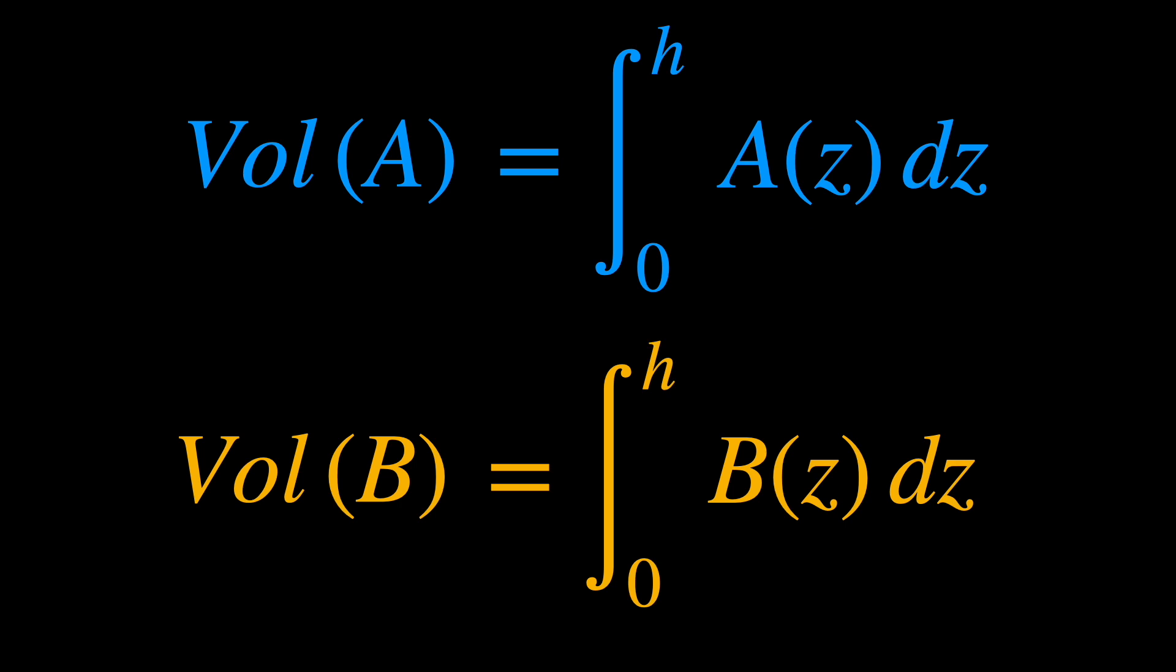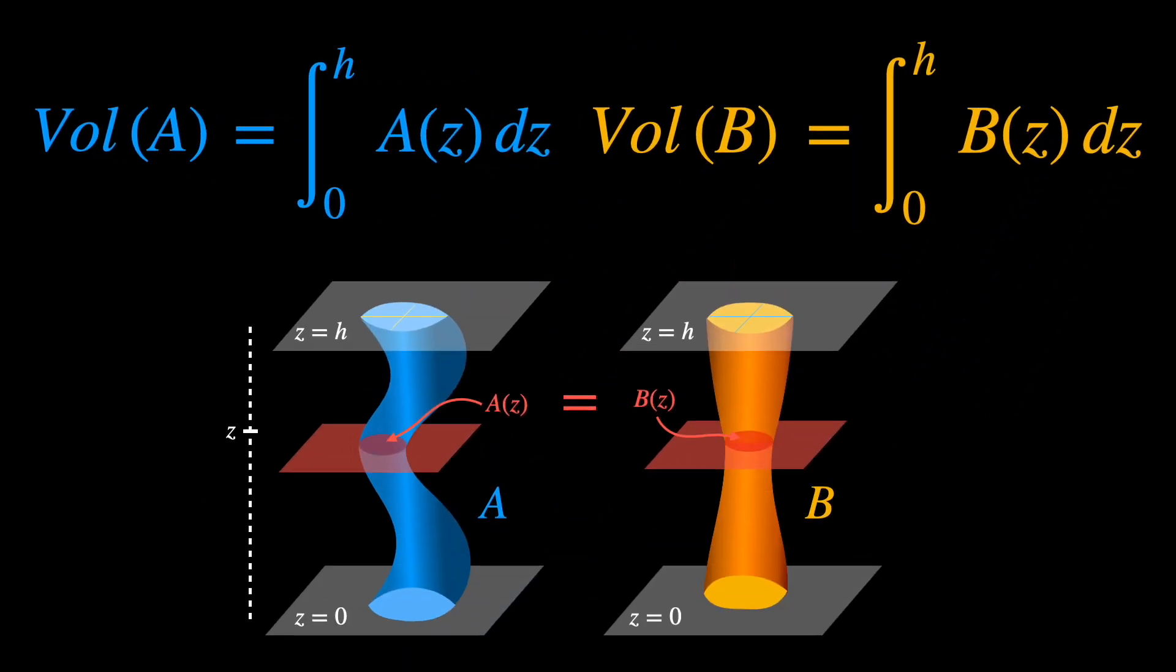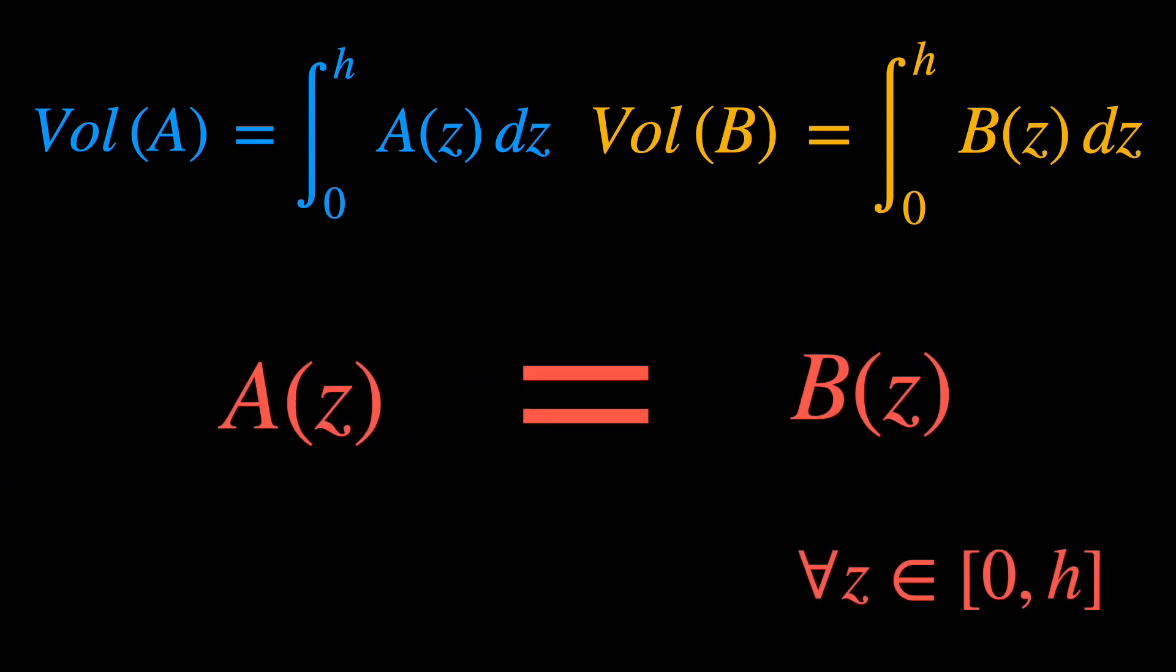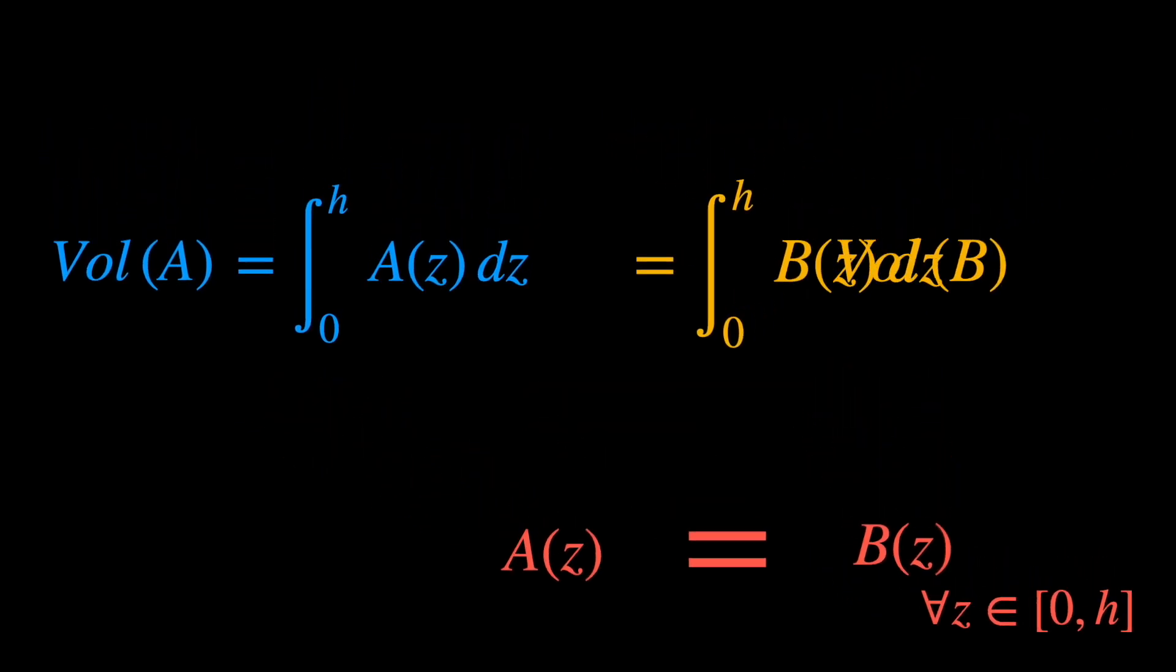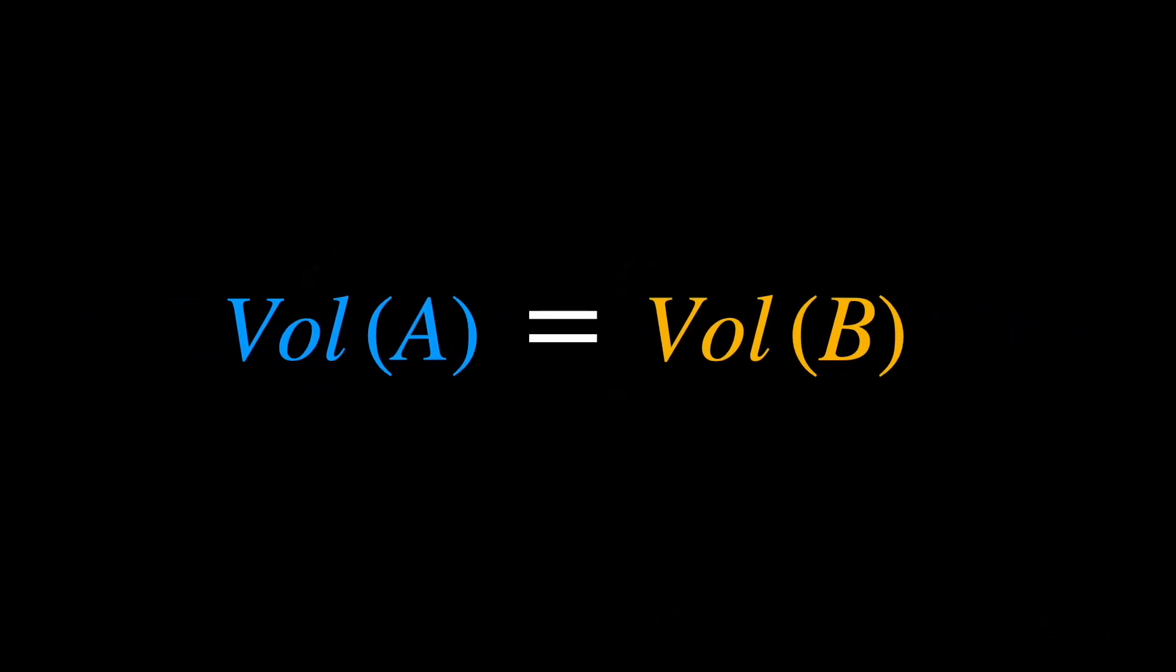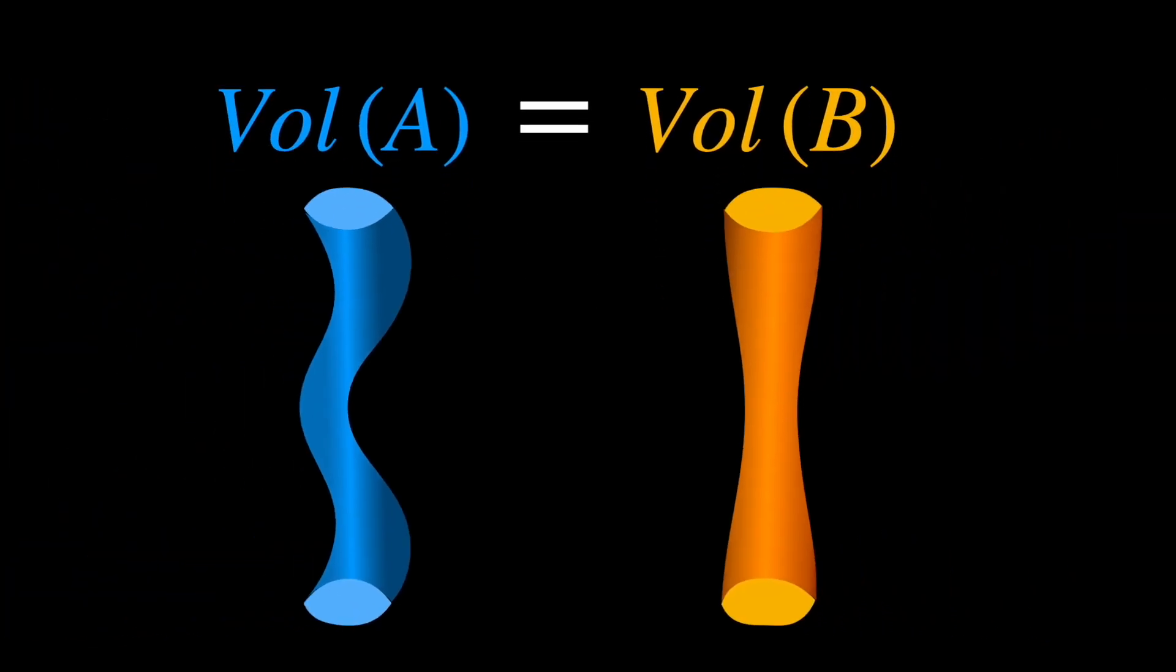Now, the volume of solid B. Since their cross-sections A of Z and B of Z are equal to each other for any height Z between zero and H, then we can write that Va is the integral for the first solid, which equals the integral for the second solid, which is VB. So Va equals VB.